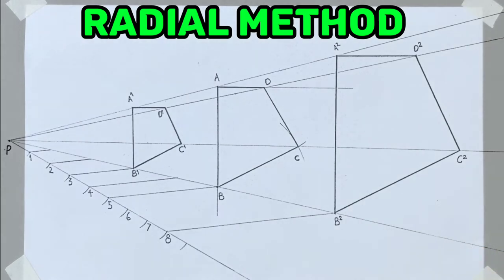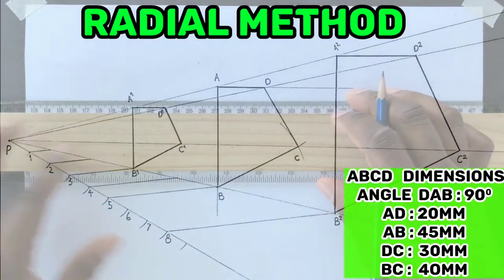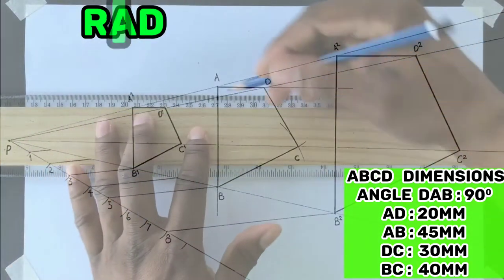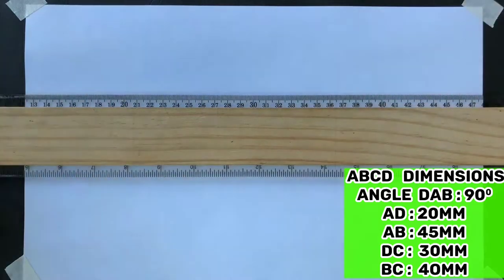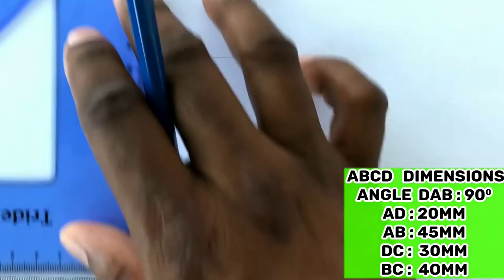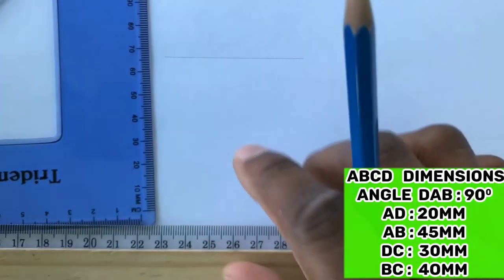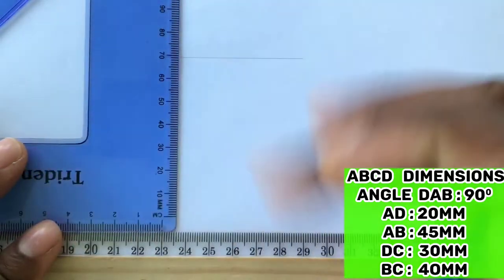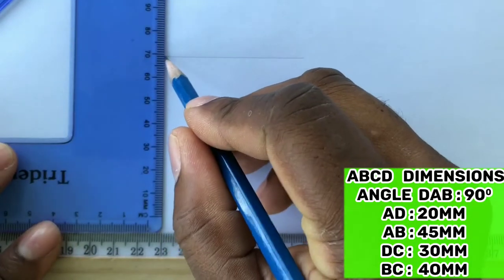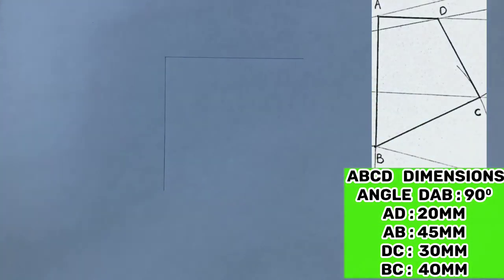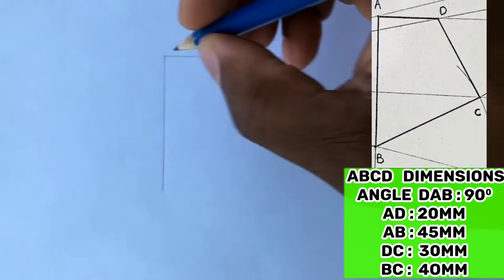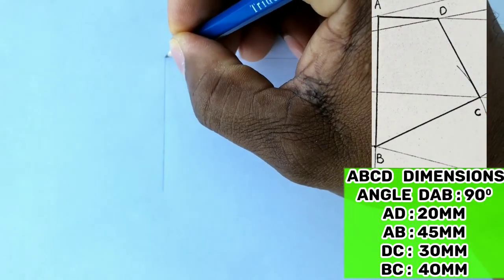You will first draw your given quadrilateral to the dimensions on the right. Use your t-square and draw a horizontal construction line. With the use of your t-square along with your set square, draw a perpendicular line to touch the end of the line you previously drew. Identify and label the intersection of both lines as point A.